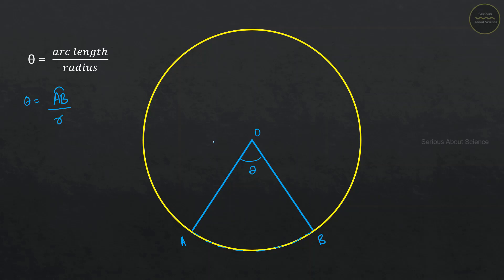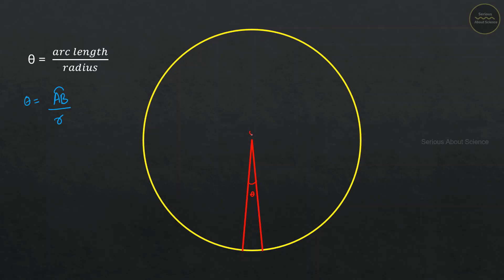We will now consider the case in which the value of theta is small. Here we have a sector such that the value of theta is very small. This is theta. The circle center is O, this point is A, and this point is B.